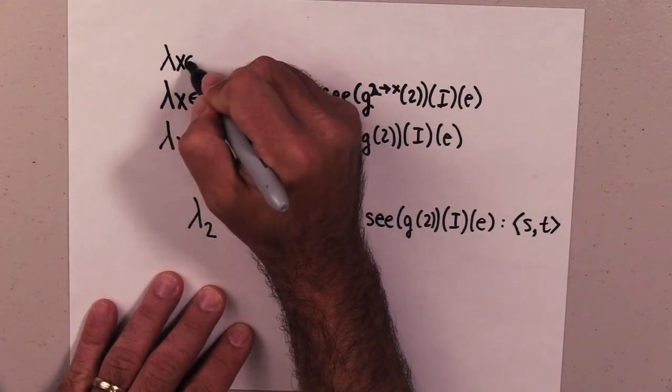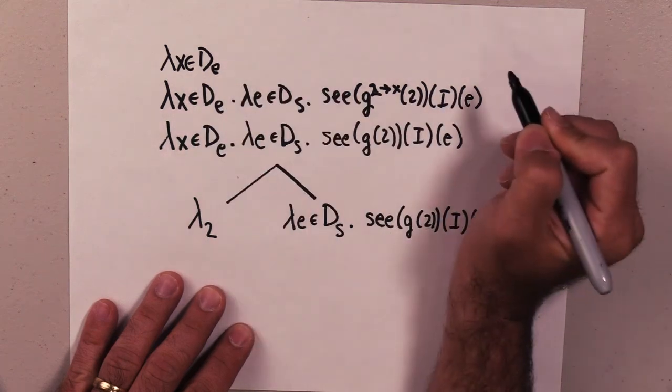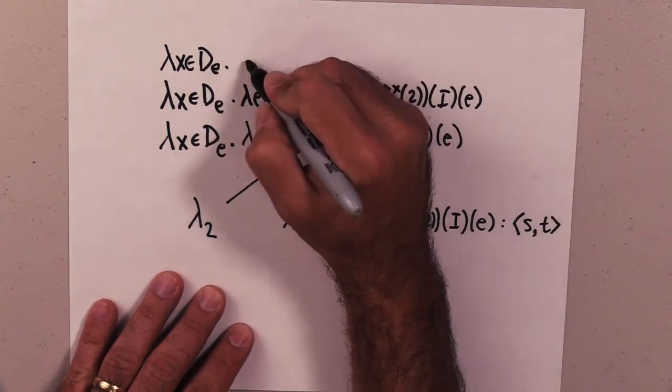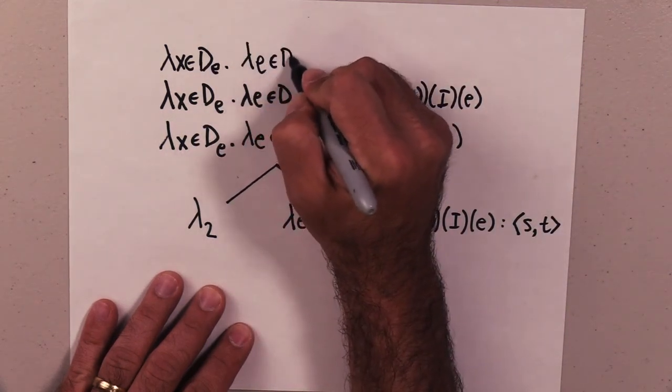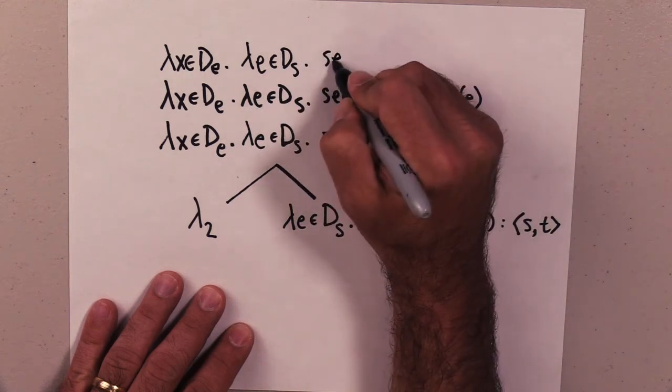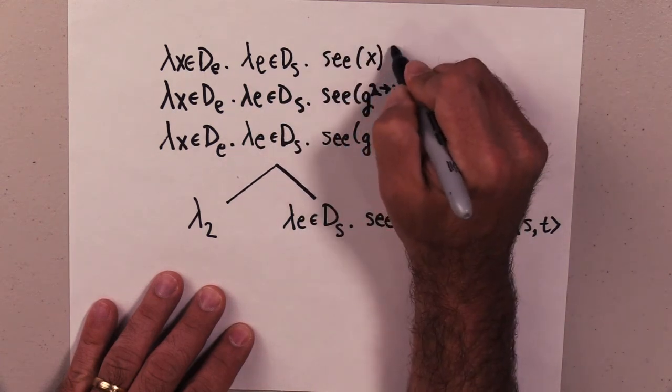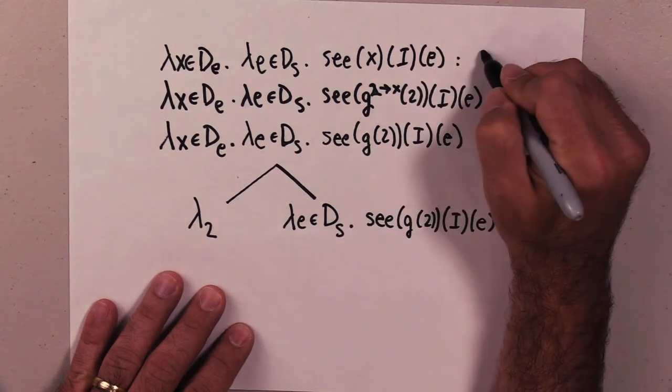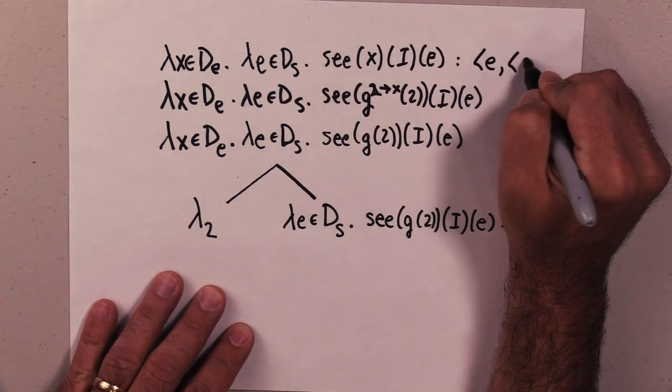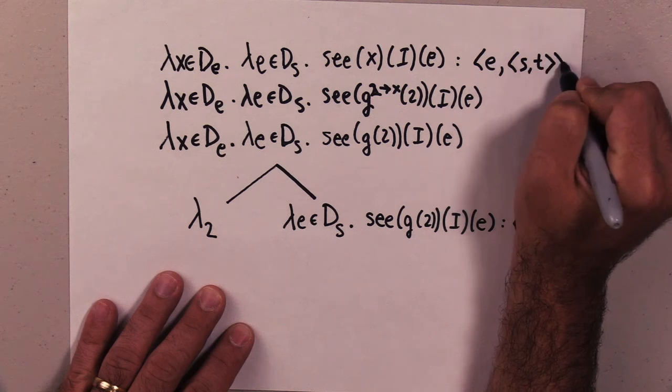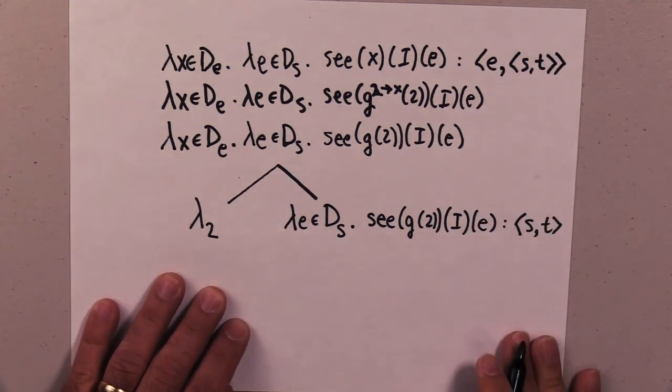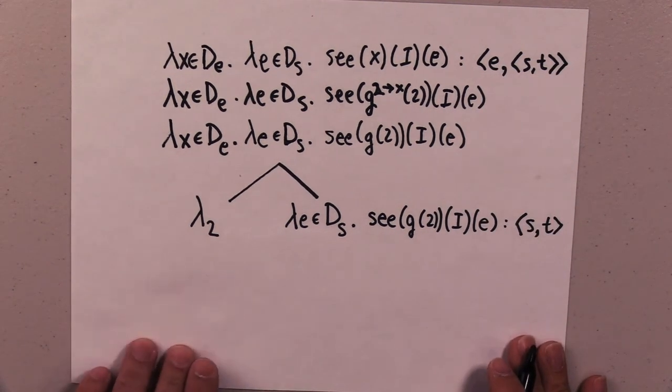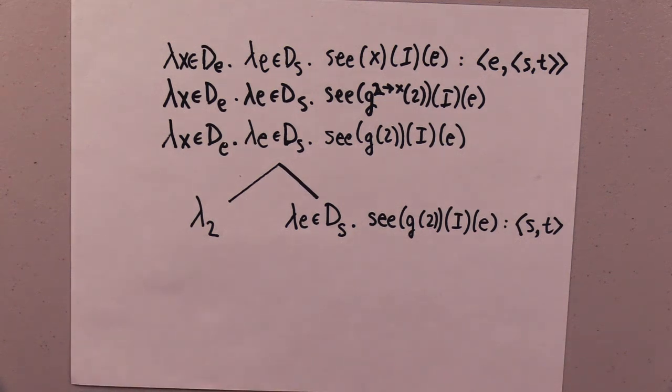Lambda x in D sub e and the e and D sub s, C x I of e, and that's of type e st. We have our expression, we have our result. And now the abstraction works just the same way, same method. You just have to remember not to lose anything as you add.